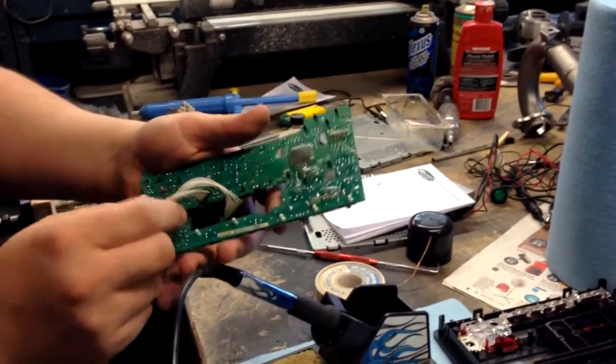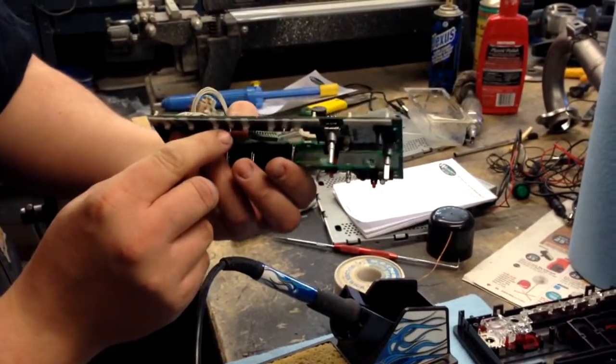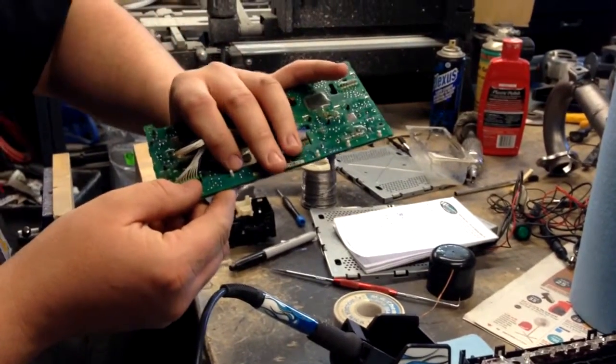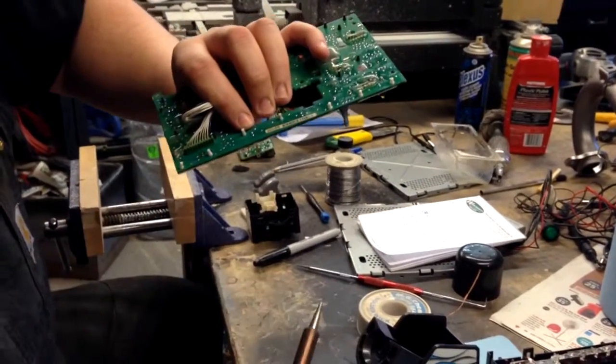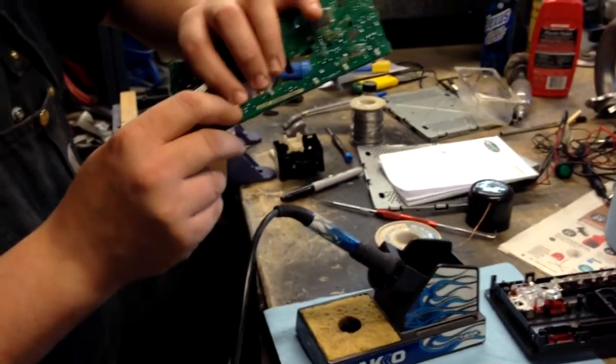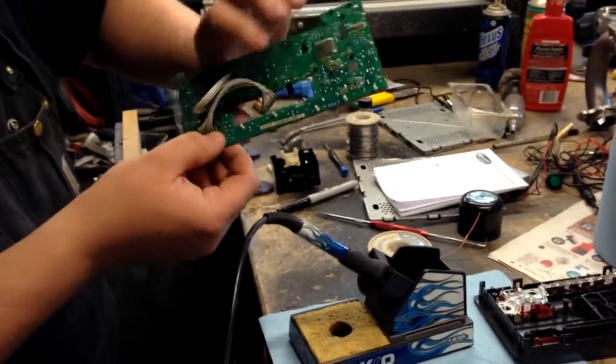First off, you're going to need to figure out where the leads are, right here, and I'll show you a little trick. You're going to need a good soldering iron so that you don't wreck the traces while you're trying to pull it out.